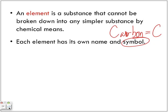We have carbon; we have hydrogen, which is H; we have chlorine, which is Cl; and we have helium, which is He. These are all examples of elements.